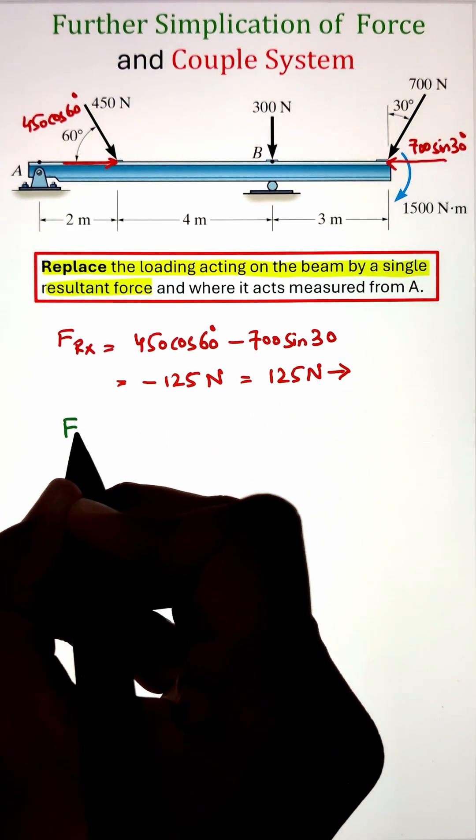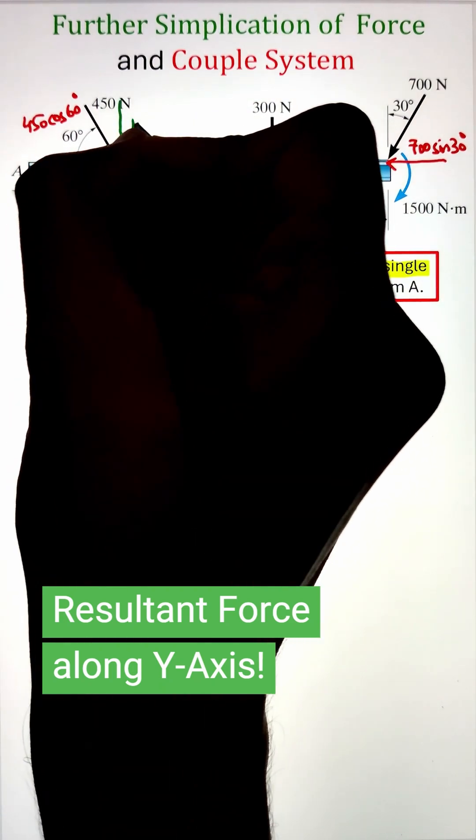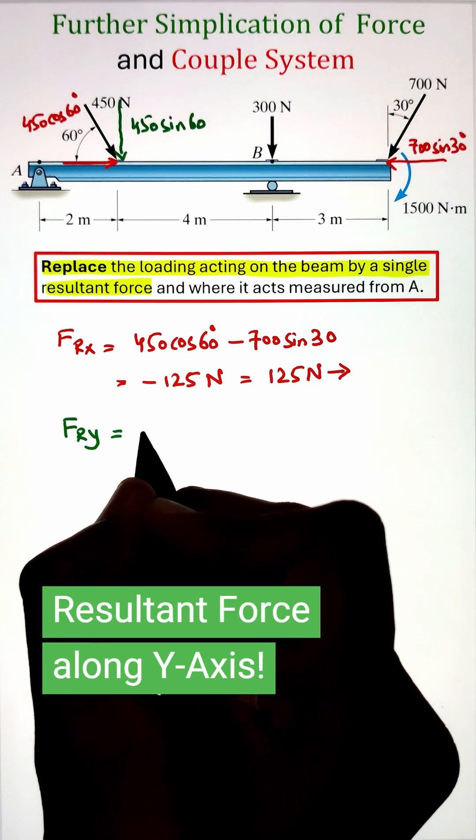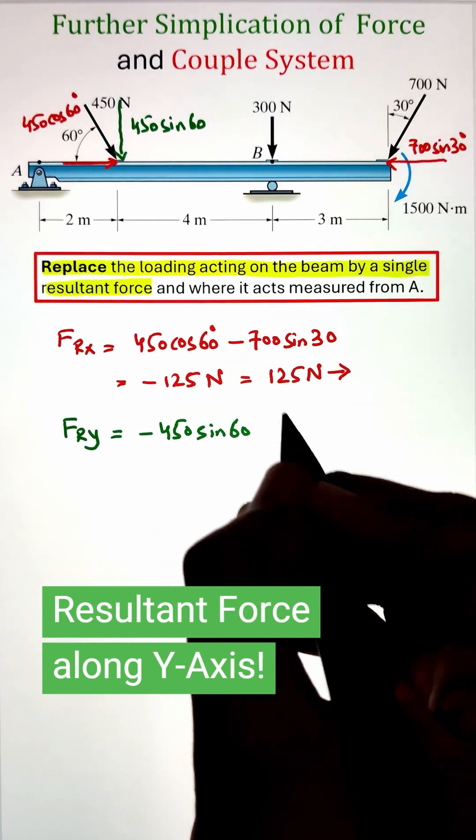Next we can do the summation of forces along the y direction to figure out the resultant force y component. In this case again, our 450 is making an angle of 60 degrees with respect to the horizontal, so taking a sine 60 function will project it downward direction.